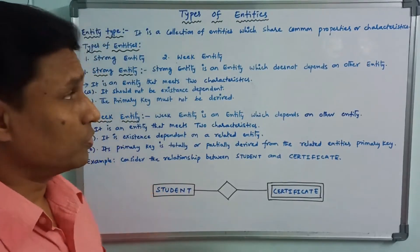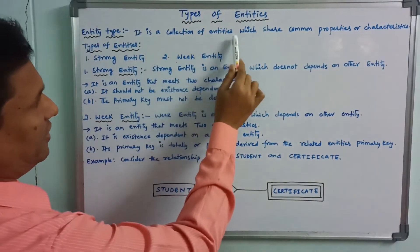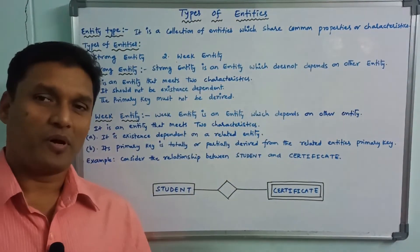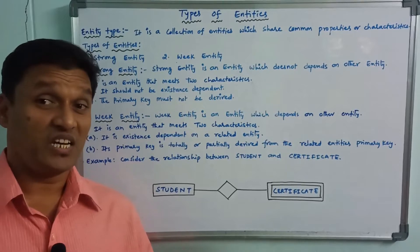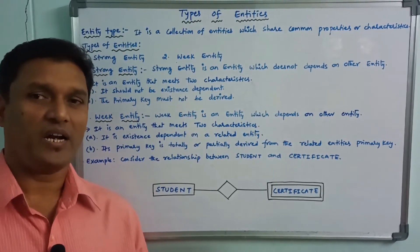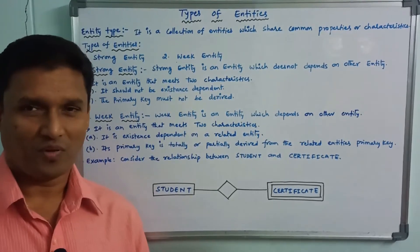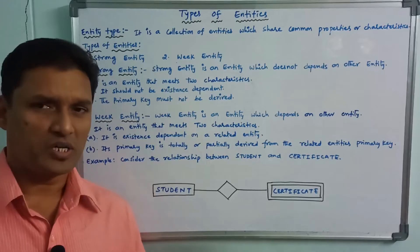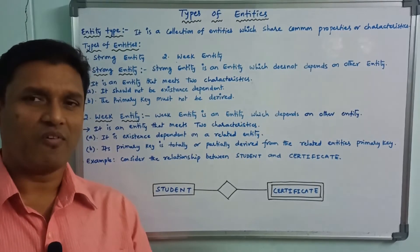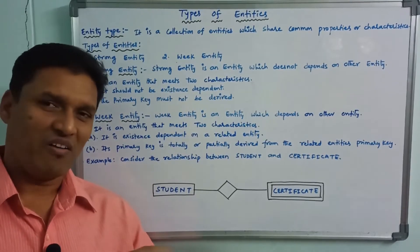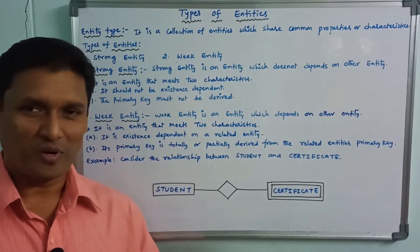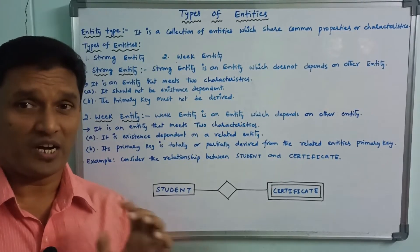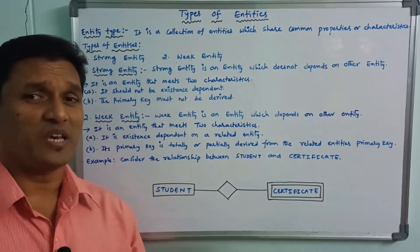Let us look at entity type first. It is a collection of entities which share common properties or characteristics. Entities that share common properties are called an entity type. For example, 'person' — all persons have the same properties. Similarly, 'vehicles' — all vehicles have the same properties. Likewise, animal, fruit, etc. That is what we call an entity type.